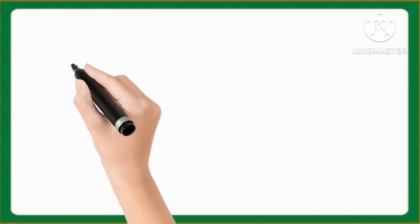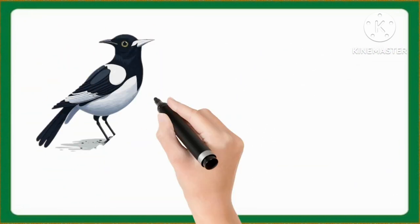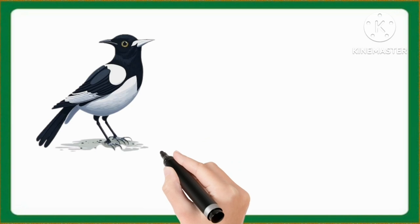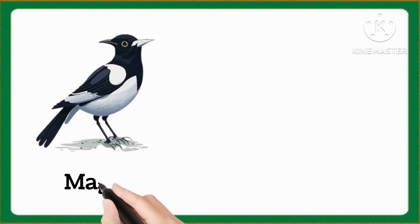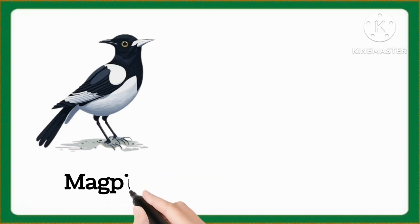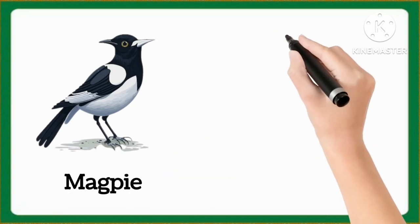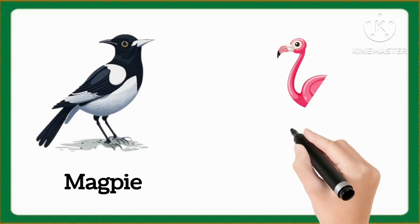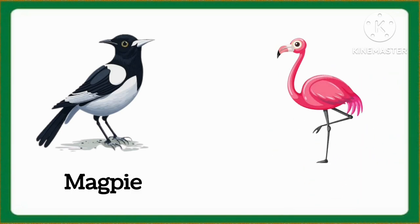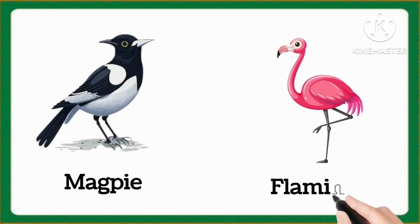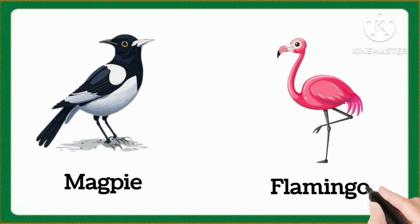And tell me which word is this, kids? This is magpie. Magpie. And which word is this, kids? This is flamingo. Flamingo.